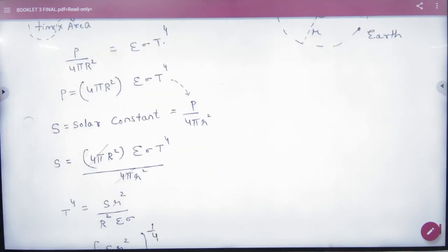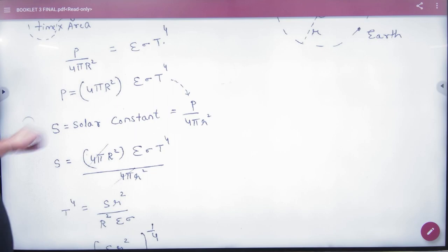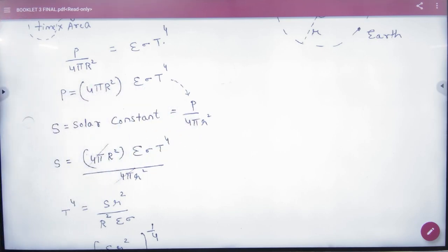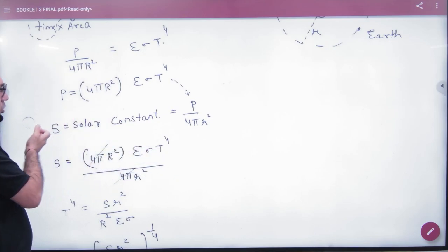Now the definition of the solar constant. The solar constant is the sun's power distributed over the sphere at Earth's distance. The earth's sphere area is 4π small r squared. So the solar constant S equals P divided by 4πr².